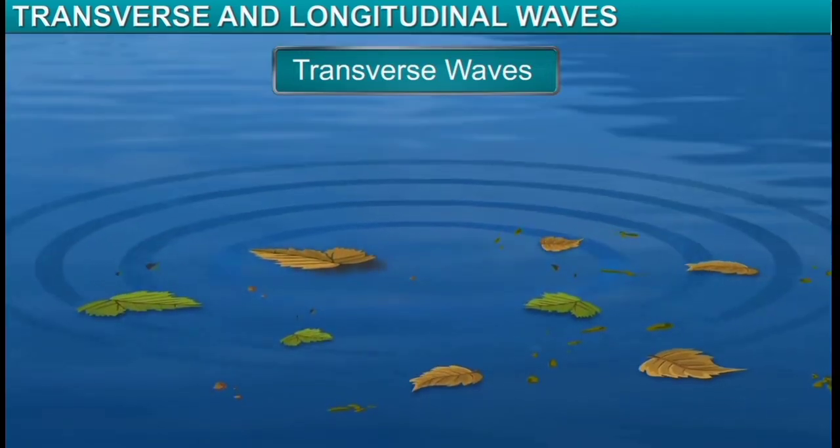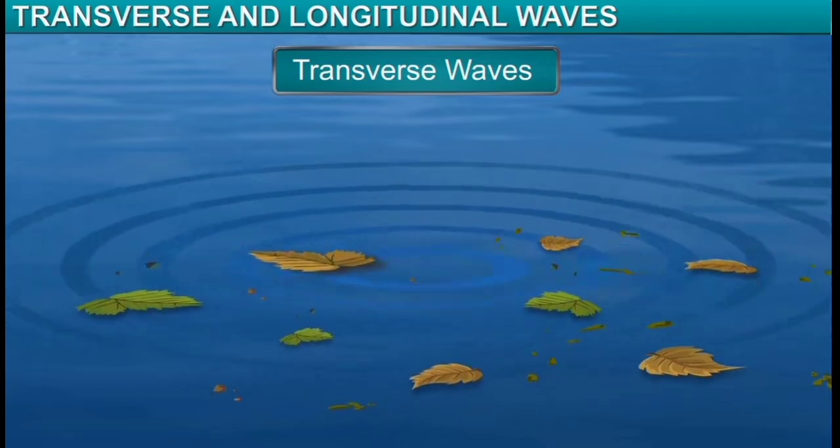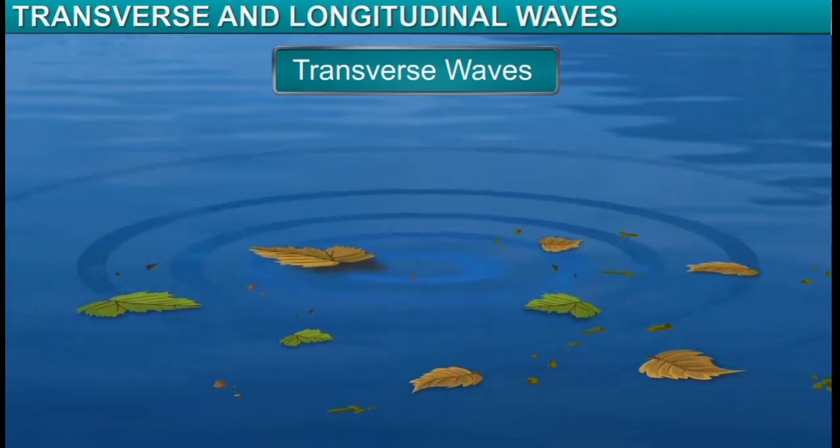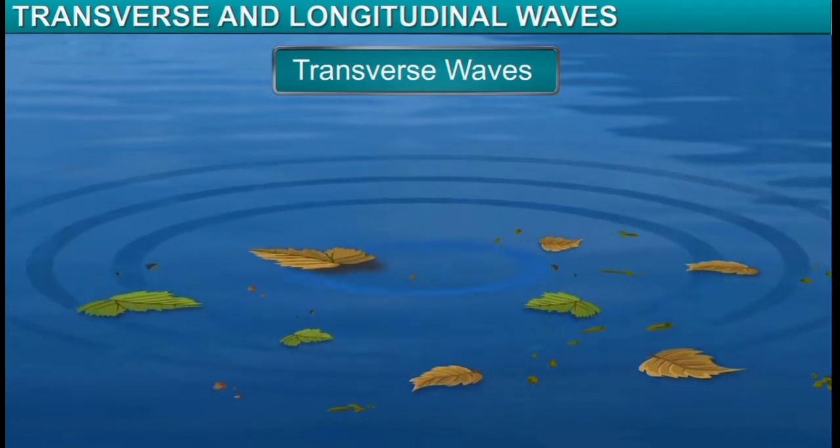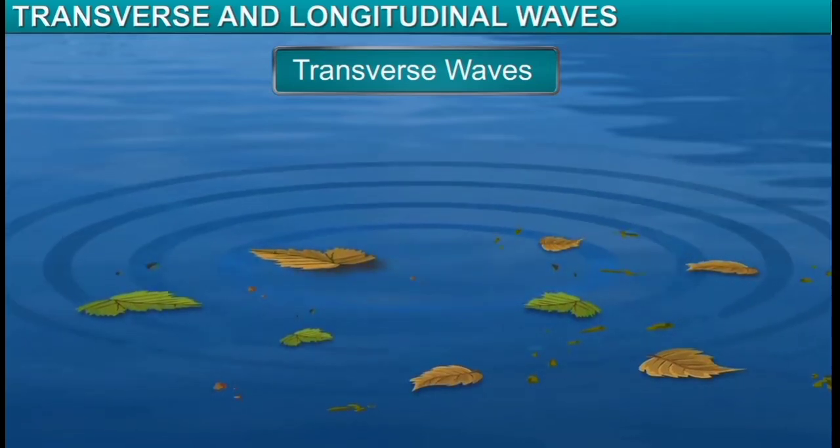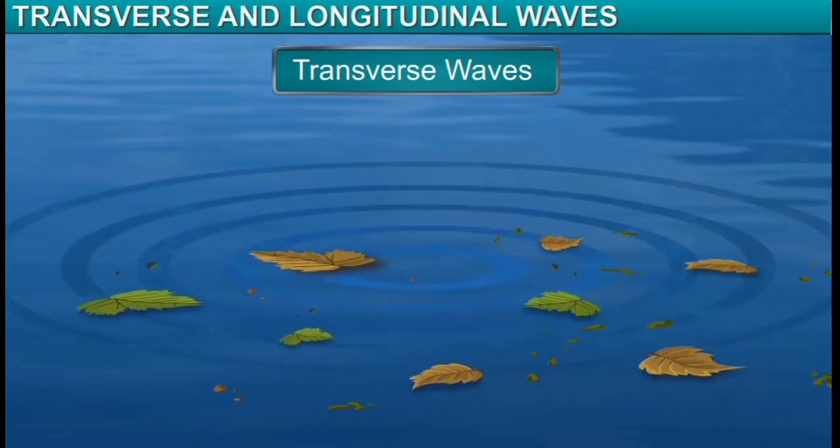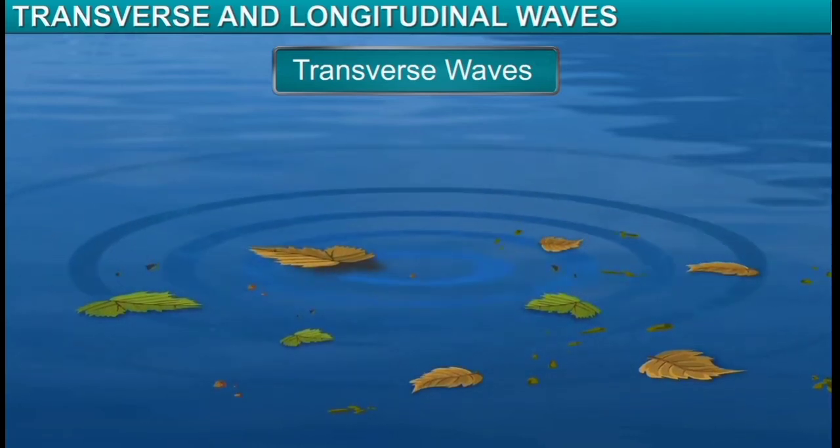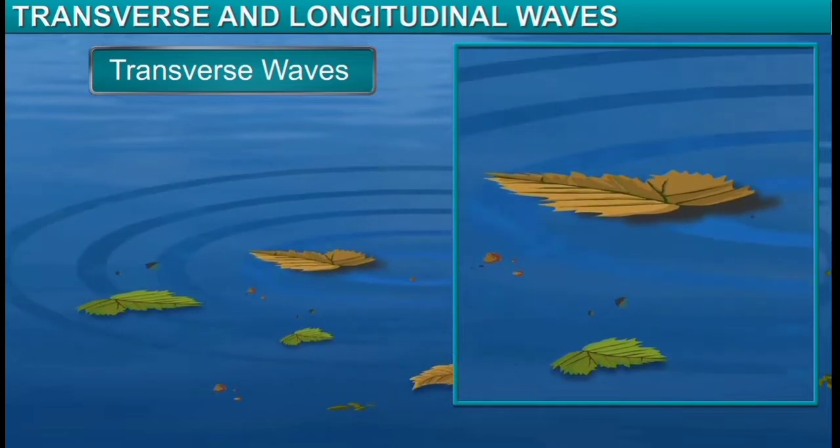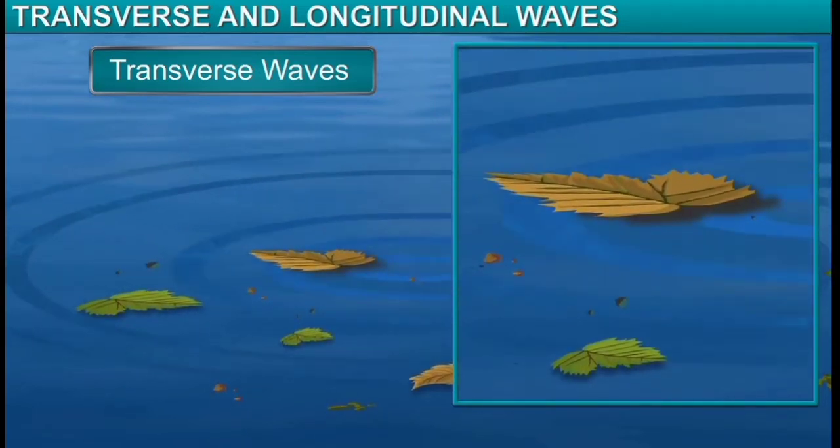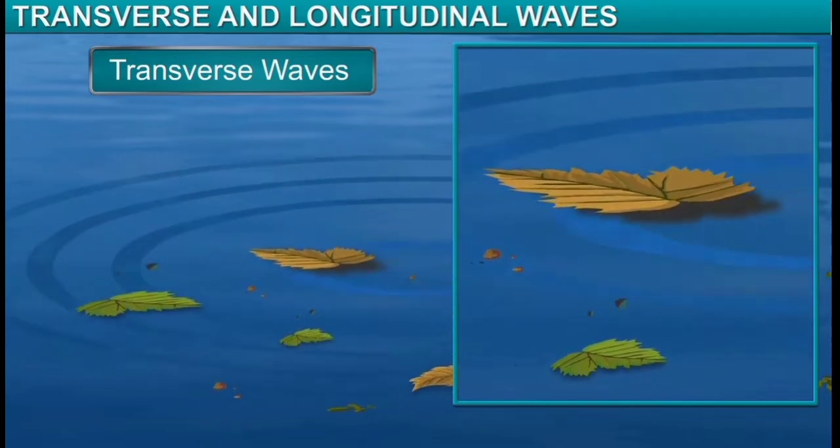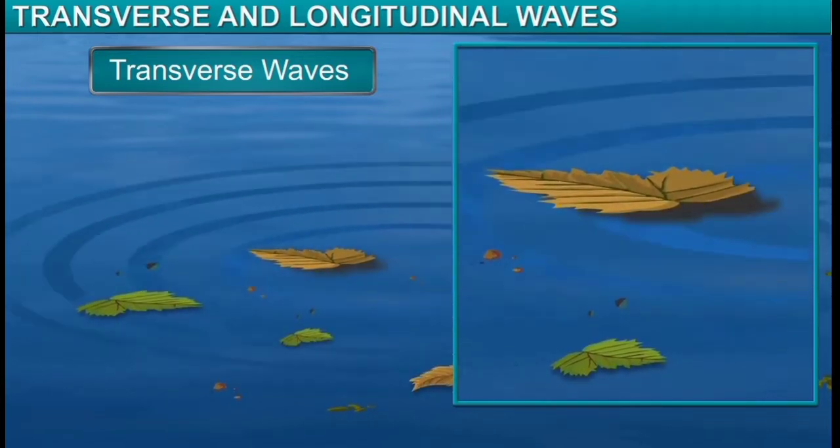When a pebble is thrown onto the surface of still water, it creates small ripples. These ripples propagate through the expanse of the water as transverse waves. In fact, if observed closely, tiny particles and dried leaves on the water surface move up and down when ripples are formed.